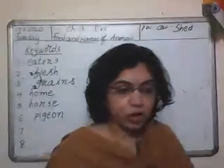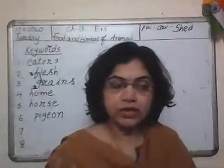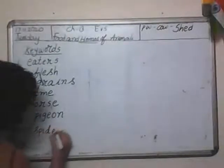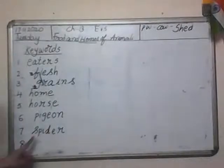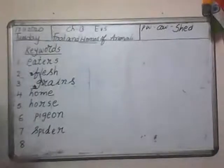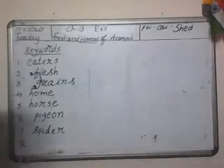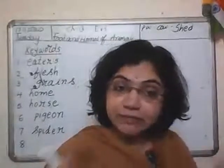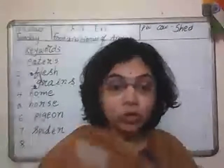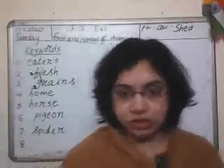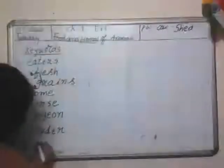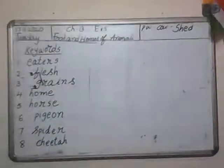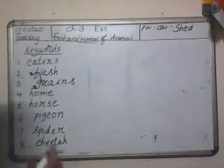Let us also learn the spelling of one insect eater: 'spider' — S-P-I-D-E-R, spider. And one spelling of a flesh eater: 'cheetah' — because it is the fastest land animal also. Cheetah is a flesh eater and the fastest land animal. C-H-E-E-T-A-H, cheetah.